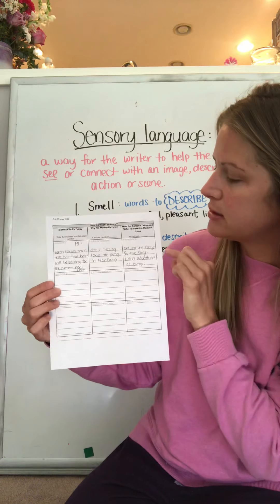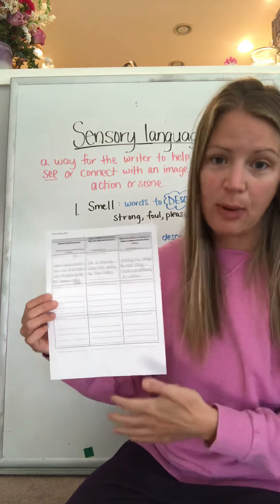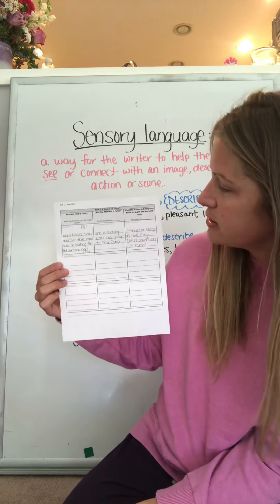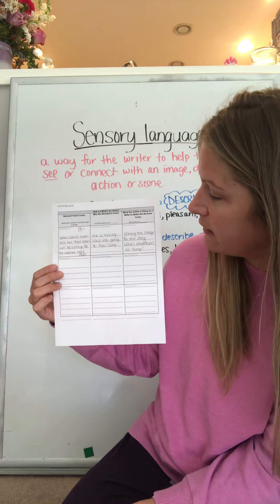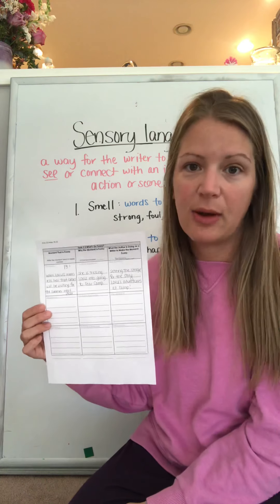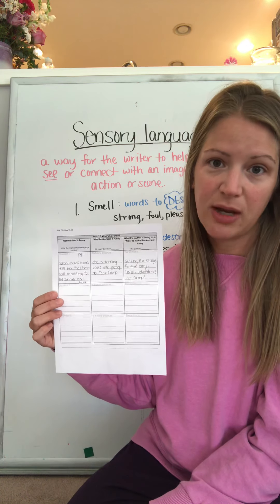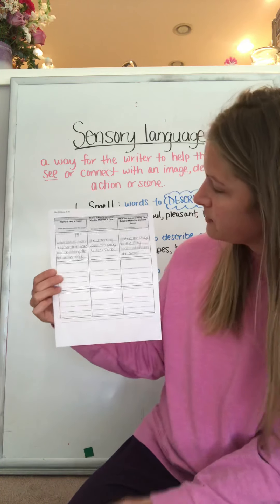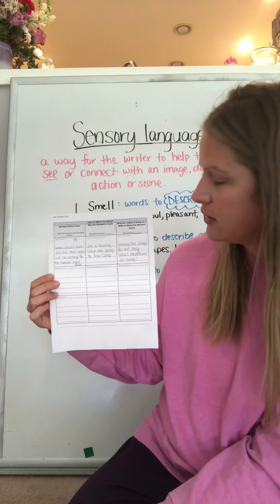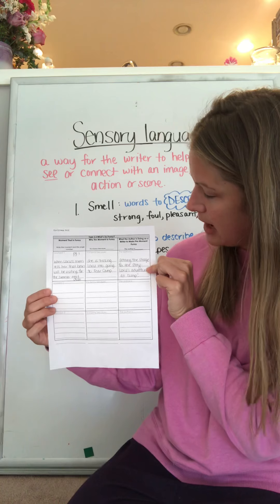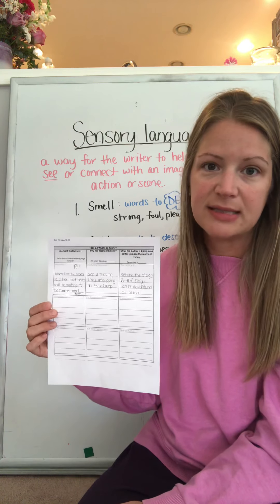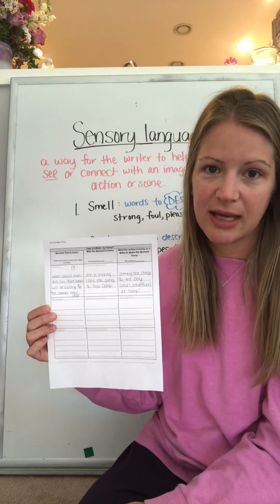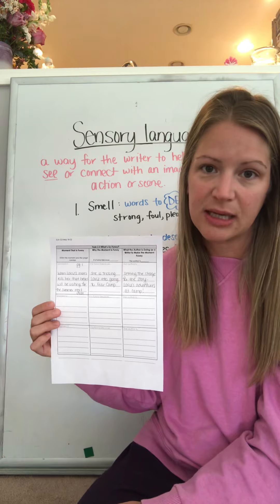So I did the first moment for you guys. You can definitely write this down or you can come up with three on your own, but really just fill in the other two. So moment one — I found on page one, and I thought it was funny when Loxie's mom tells her that bears will be visiting next door for the summer. Loxie was giving her mom a hard time about going to fear camp, so her mom thought, let me tell her that the neighbors are having bears visit next door, because she knew Loxie was afraid of bears — that would get her to willingly go to fear camp. It is funny because she is tricking Loxie into going to fear camp and it worked. For the third column, the author was setting the stage for the rest of the story, because there really would be no story if Loxie didn't go to camp. The whole story is about her adventures at camp, so right off the bat the author was using humor to set the stage.